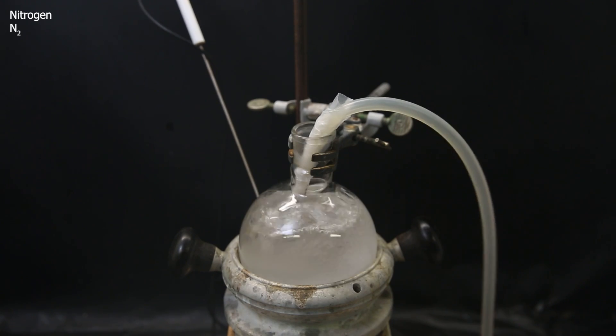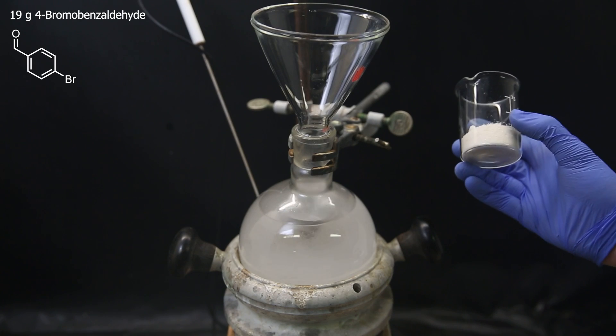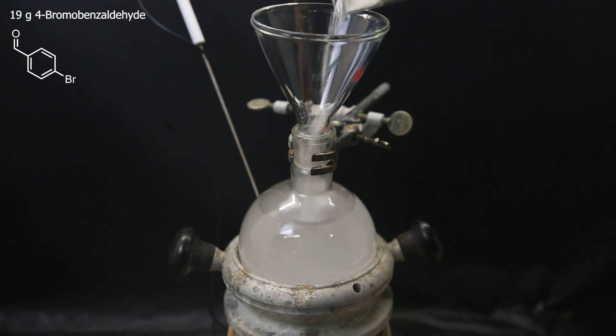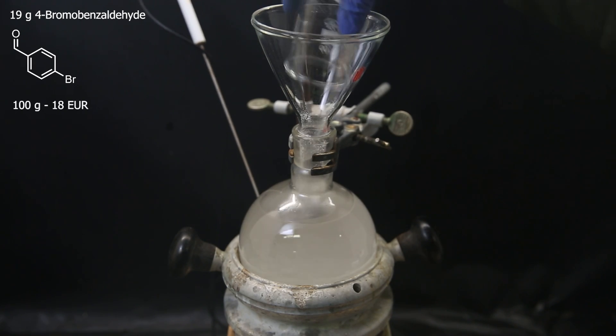I then degas this mixture by bubbling nitrogen through it, which will expel dissolved oxygen, which can interfere with the reaction and decrease the yield. When that's done, I add in 19 grams of the first reagent, 4-bromobenzaldehyde, which was very affordable.